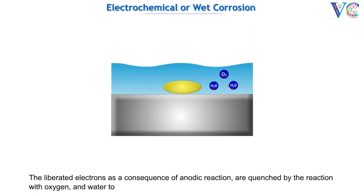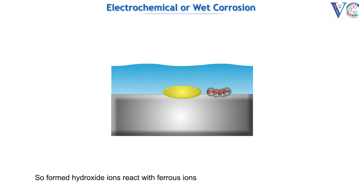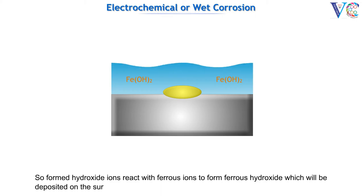The formed hydroxide ions react with ferrous ions to form ferrous hydroxide, which will be deposited on the surface of the metal.